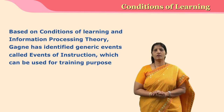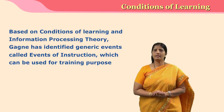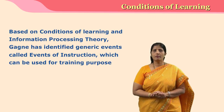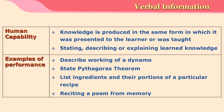Based on conditions of learning and information processing theory, Gagné suggested certain events of instruction which can be used for training purposes. The first category of learning is verbal information. When the learner produces knowledge in almost the same fashion in which it was given, the learner is demonstrating the capability of verbal information.